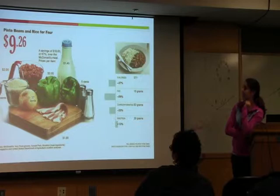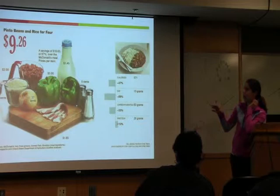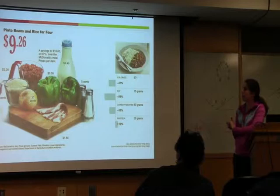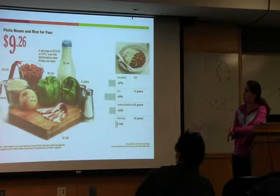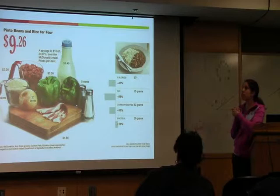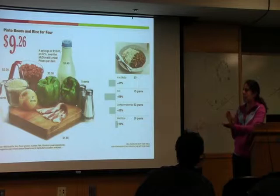And for only $9, you can get the ingredients to make rice and beans with milk for four people. That's $18 cheaper than going to McDonald's for one meal. You're also getting some vegetables from the peppers and getting some milk. So even though fast food seems like a cheap option, there are a lot of other options if you plan some meals at home.